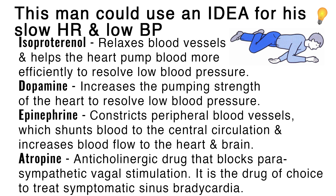Our third mnemonic involves drugs used to treat a slow heart rate and low blood pressure: Isoproteranol, Dopamine, Epinephrine, and Atropine. Isoproteranol relaxes blood vessels and helps the heart pump blood more efficiently. Dopamine increases the pumping strength of the heart. Epinephrine constricts peripheral blood vessels, shunting blood to the central circulation to increase blood flow to the heart and brain. Atropine is the drug of choice to treat symptomatic sinus bradycardia.